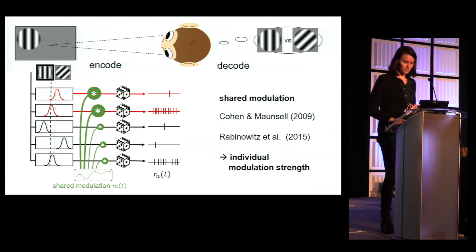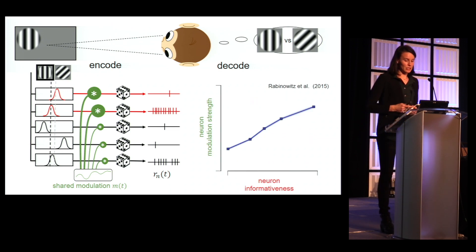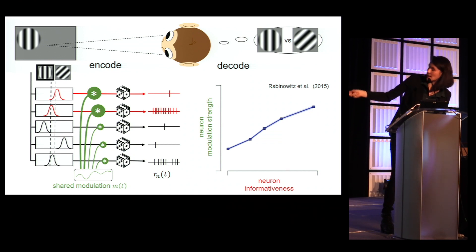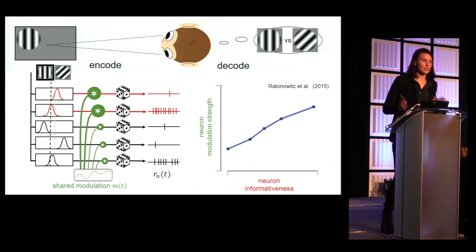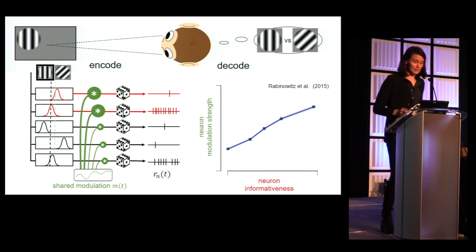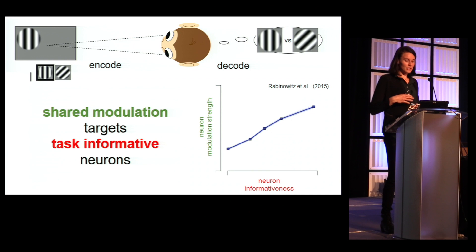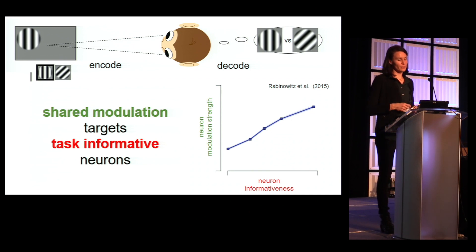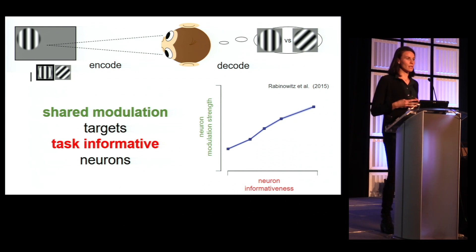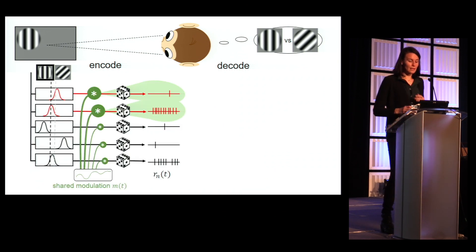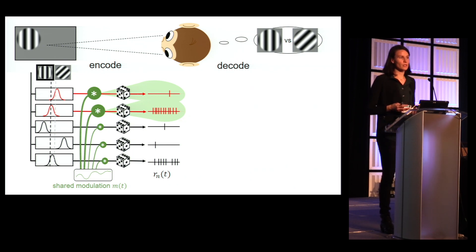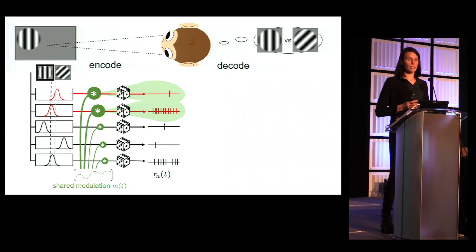So it's not the same for each neuron. How much a neuron was affected by the modulation correlated with how informative the neuron was for the specific task. This figure from Rabinowitz et al. shows exactly that — the more the neuron helped differentiate between two stimuli, the stronger it was affected by the modulation. In other words, the shared modulation seems to target task-informative neurons. This is counter-intuitive because it means we inject more noise into those neurons that are informative. However, it could also be seen as a labeling mechanism — the shared modulation labels the informative cells.